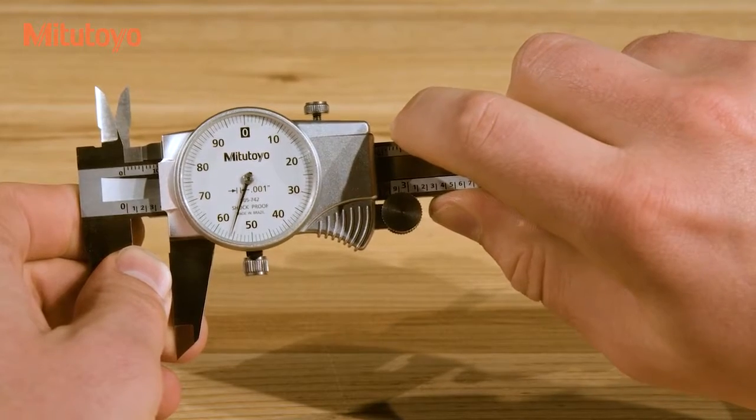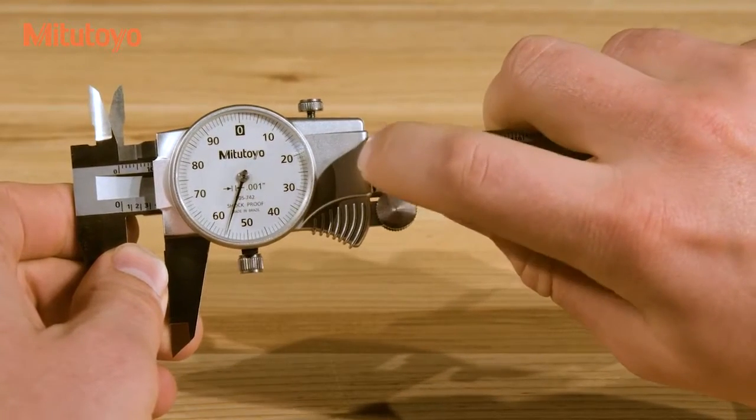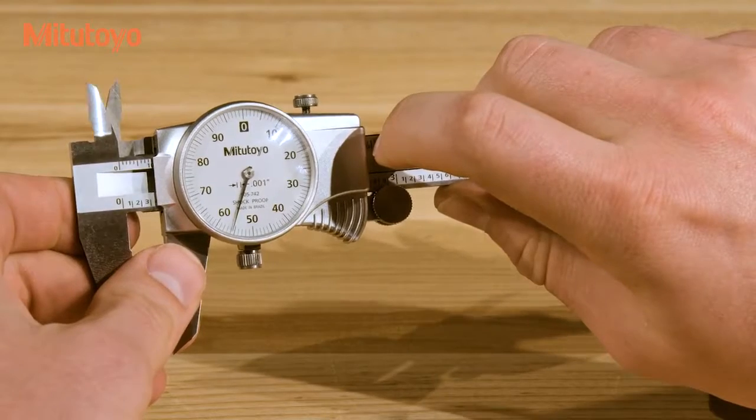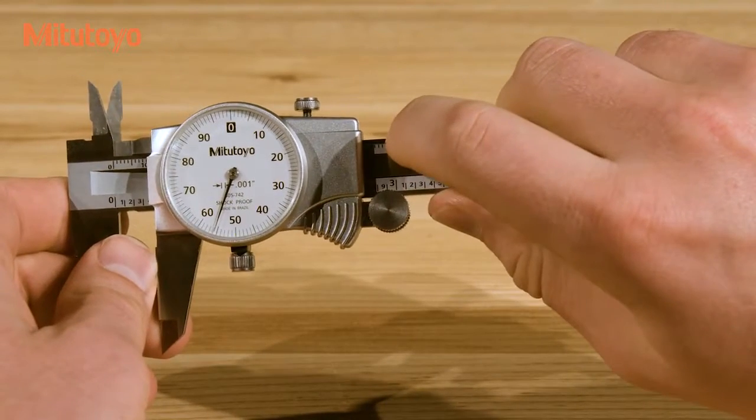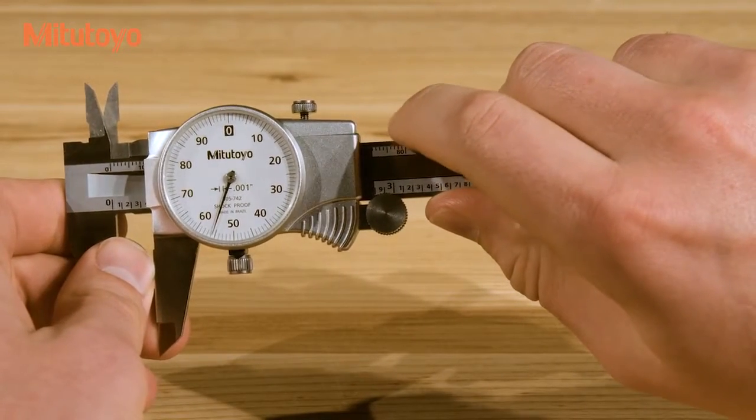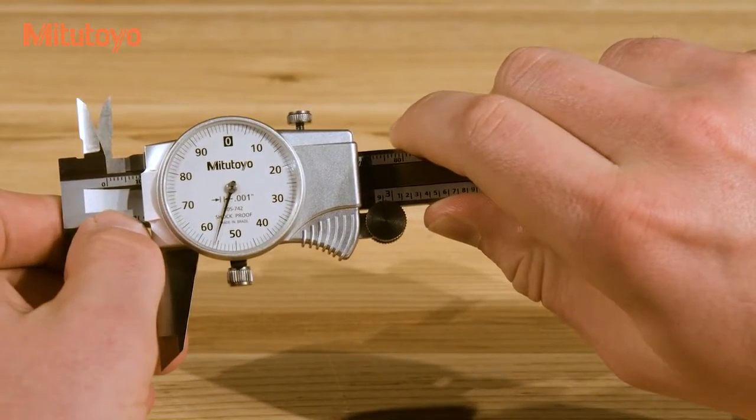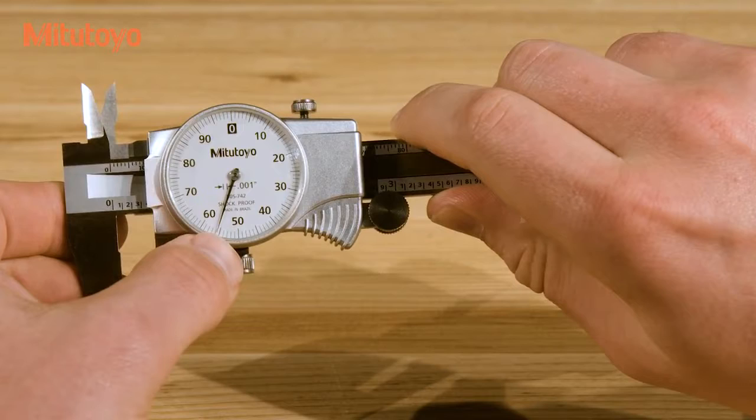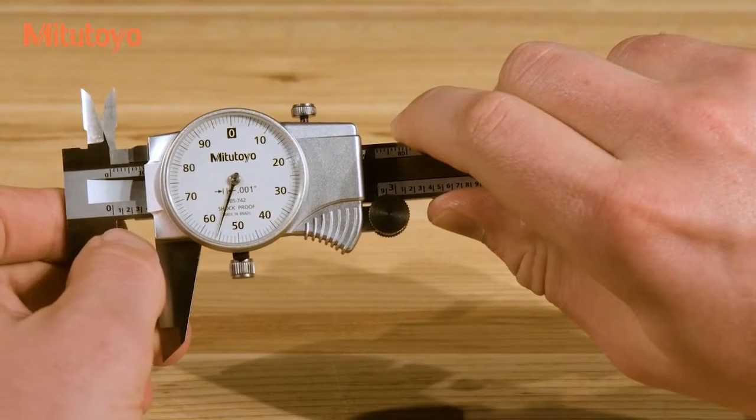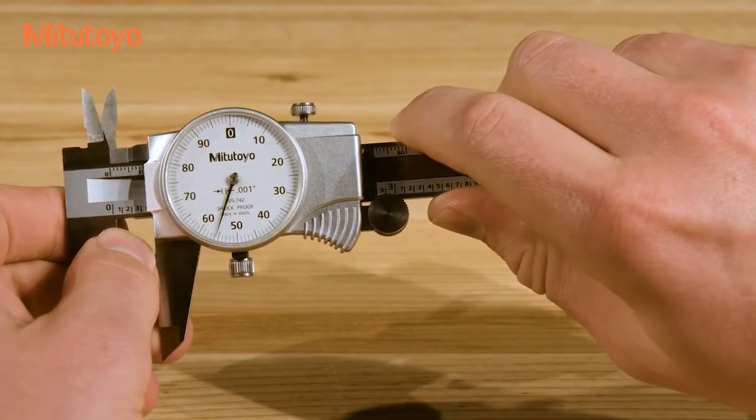Next, look at the dial and determine which number the hand is pointing at. In this case, it's pointed at 56, so that's 0.056 inches. The final reading is the sum of these two readings, so that's 0.3 and 0.056 for a final reading of 0.356 inches.